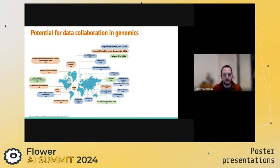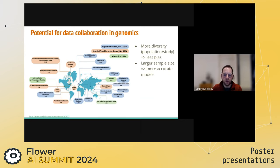Training a single model on multiple genomic datasets from different populations reduces this bias and makes phenotype-from-genotype predictive models more fair. Combining genomic datasets also increases sample size, which leads to more accurate models and boosts statistical power, allowing us to add rare variants as additional features and to predict rare diseases.